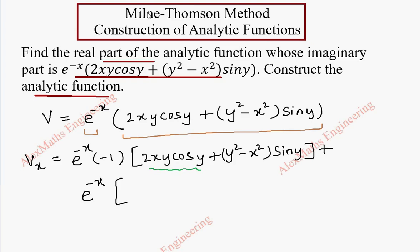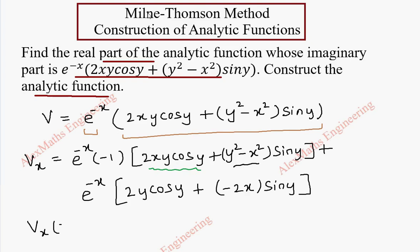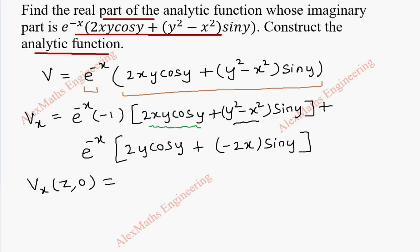We have 2xy·cosy where the y terms are constants, so 2x derivative is 2 and the constants are written as it is. Here again siny is a constant, and we differentiate with respect to x but y is a constant so it is 0; we have only 2x and this constant siny written as it is. Now vx of (z, 0): since we have y terms throughout, when we put y as 0 both terms become fully 0, so vx is fully 0.